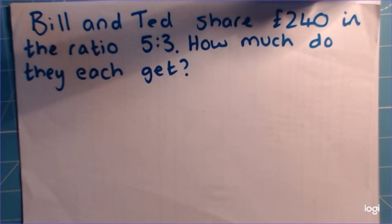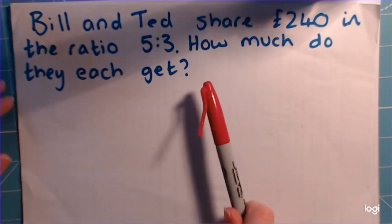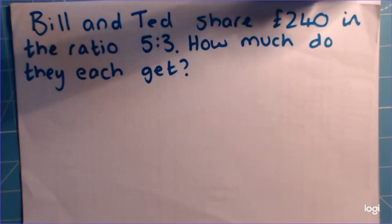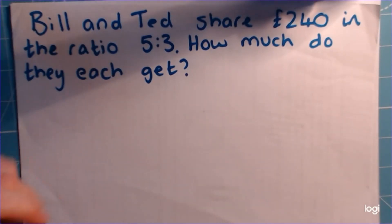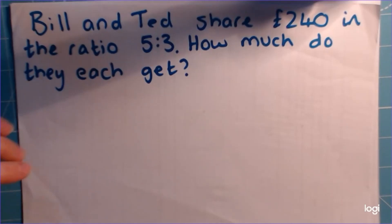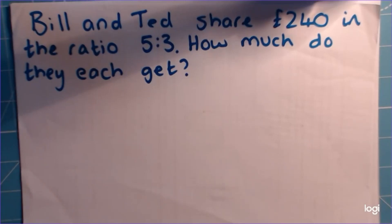Hi everyone, okay let's give this a whirl, see how we get on. So you might remember this from last lesson — I've brought Bill and Ted back again, I know you guys like Bill and Ted, and they're going to share £240 in the ratio 5 to 3, and we want to know how much do they get each.